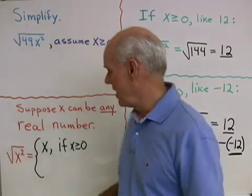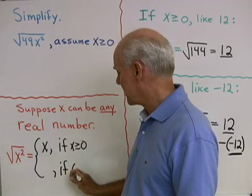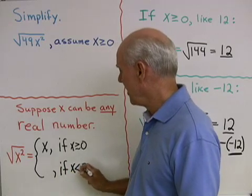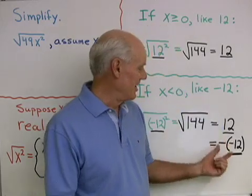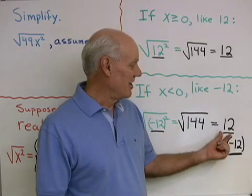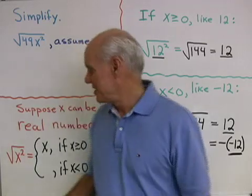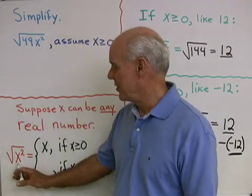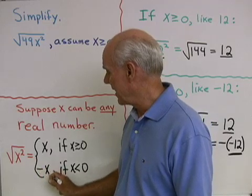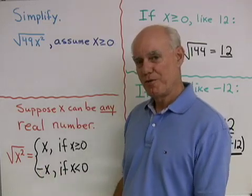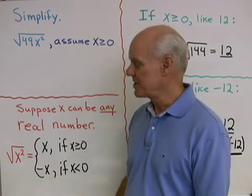But when x is a negative number — so if x is less than 0 — I end up with 12, which is the opposite of my negative 12. So when x is a negative number, the square root of x² isn't x, it's negative x. So the square root of x², when x is a negative number, turns out to be the opposite of x.